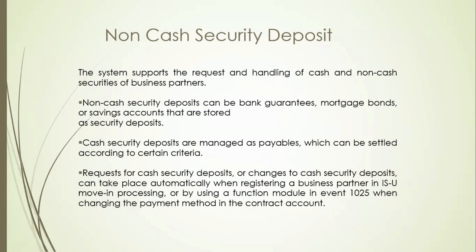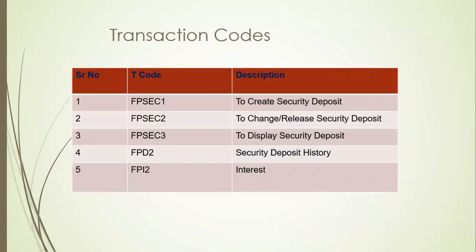To change that bank guarantee into cash, we link that bank to the cash. Now to link that bank to our contract, we need the whole system to be in place. So setting up the bank is a separate part, and that setting of the bank happens with the business partner and contract — that bond or bank guarantee is converted into cash. The key T-codes for security deposit: FPSEC1 to create the security deposit, 2 and 3 to release it. And if you need to check history or do calculation for security deposit, use FPD2.